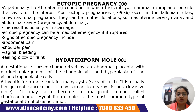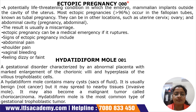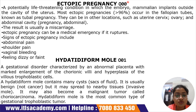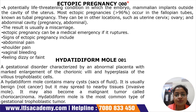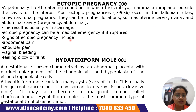The first important topic is ectopic pregnancy, code O00. It is a very important and commonly seen condition, particularly in women who suffer from endometriosis, irregular periods, PCOS, or dysmenorrhea, though it can occur in anyone. It is a potentially life-threatening condition in which the fertilized embryo implants outside the cavity of the uterus.